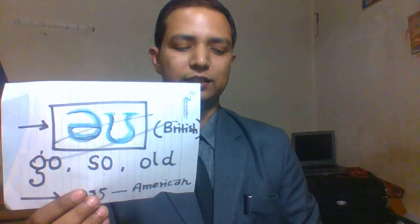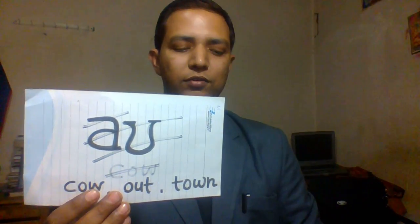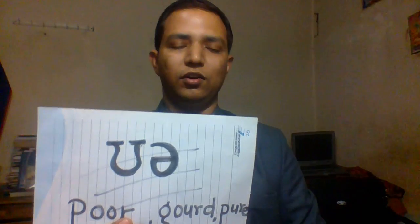Next is the OI sound, as in boy, noise, and point. Next symbol is the OU sound — A and U combined — as in old and wrote. Next is the OW sound, as in cow, out, and town. Next is the EAR sound, as in near, deer, and tear. Second last is the AIR sound — A and A — as in fair and care. And the last one is the OOR sound, as in poor.